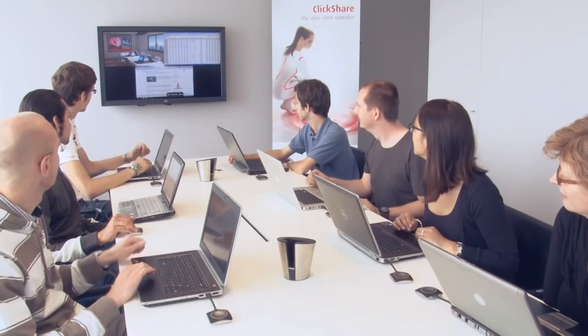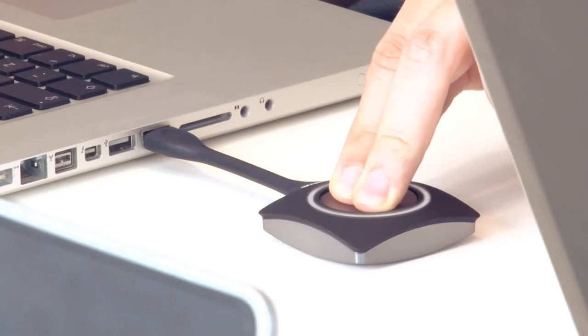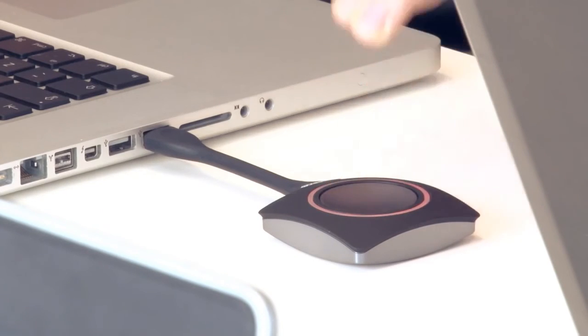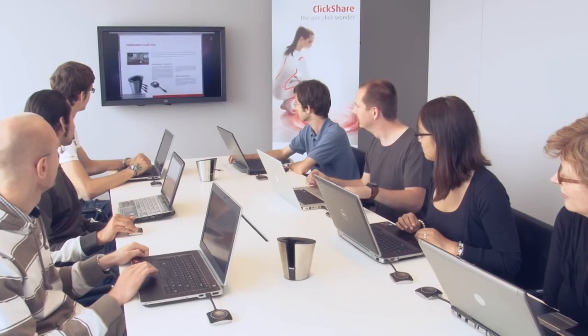Up to four people can show their content on the screen simultaneously. However, more people in the room can have a ClickShare connection — we can have up to 25 connections for one ClickShare base unit. In this case we have seven people who all have a ClickShare button in their laptop that is ready to share. All of them have one-click access to the screen. If one person clicks and holds the button for a few seconds, then this user's image becomes the only one shown on screen.